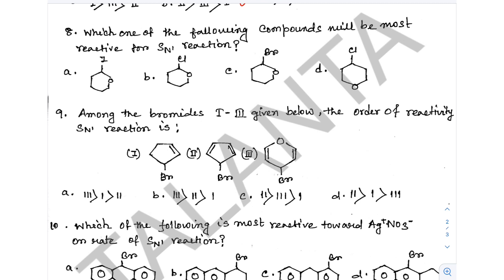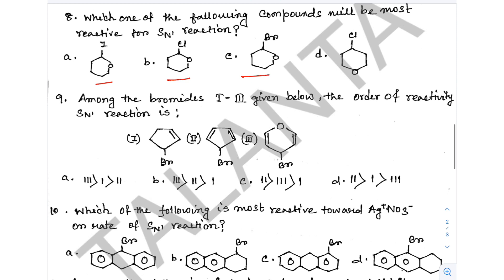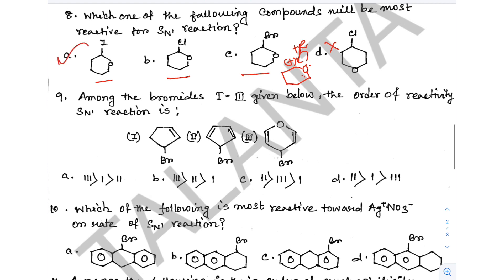Next, question 8: Which of the following compounds will be most reactive for SN1 reaction? SN1 reactivity depends on carbocation stability. The most stable carbocation reacts fastest in SN1. If the leaving group is iodine — since I⁻ is the best leaving group — then option 8a is the correct answer.